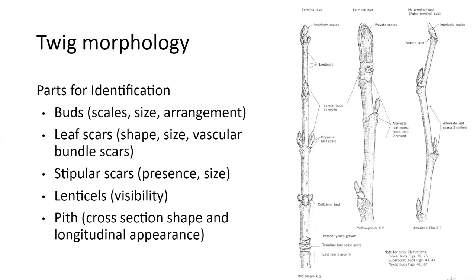We saw some great examples of stipular scars with Liriodendron tulipifera. Then we talked about lenticels — specifically we talked about lenticels for black cherry and we'll talk about elderberry as well. Those are small dots or lines on the tree; they can be horizontal or vertical, and a tree having those could be a diagnostic character. We can also look at the pith by taking a cross-section of a twig, splitting it and looking at it in cross-section to see if it has particular characters.